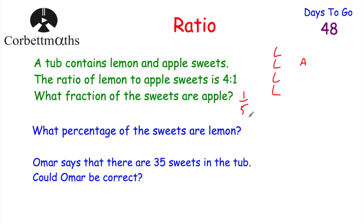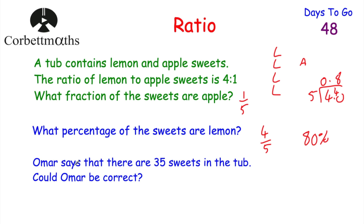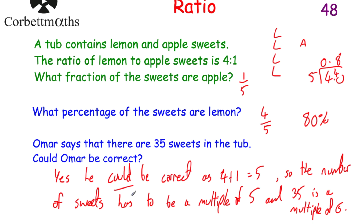What percentage of the sweets are lemon? Since one fifth are apple, four fifths are lemon. One fifth is 20%, so four fifths is 80%. Therefore 80% of the sweets are lemon. You can verify this by doing 4 divided by 5 = 0.8 = 80%. Finally, Omar says there are 35 sweets in the tub — could he be correct? Since 4 plus 1 equals 5, the total must be a multiple of 5. Since 35 is a multiple of 5, yes, Omar could be correct.